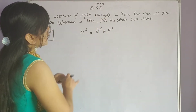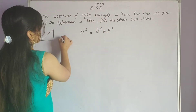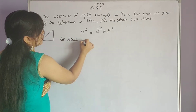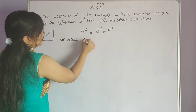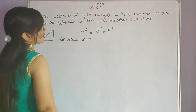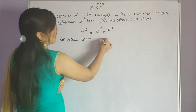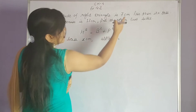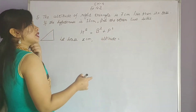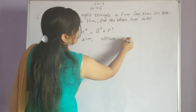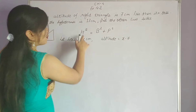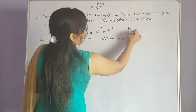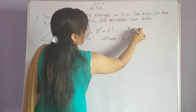Let's suppose the base is x cm. If base is x cm, then the altitude, according to the question, is 7cm less than the base — which means x minus 7. Now we apply the Pythagoras theorem to this question.